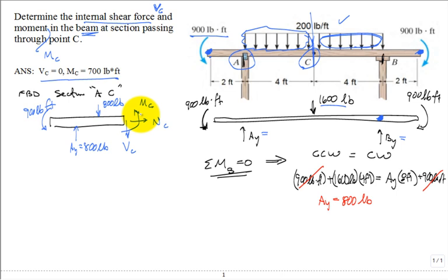They didn't ask for N sub C, but if you do the sum of the forces in the X, guess what, that is zero. But do the sum of the forces in the Y or sum of the moments about a particular point, and then you should be able to solve for our two unknowns, V sub C and M sub C. This is zero, so let me pause and see if you can reproduce those answers.